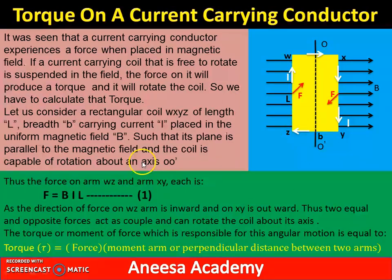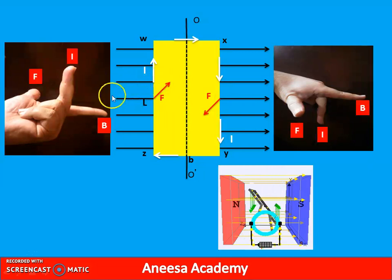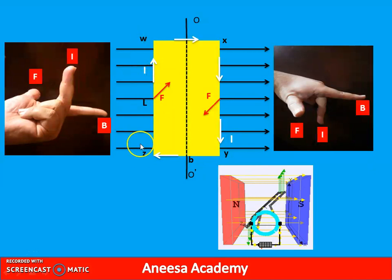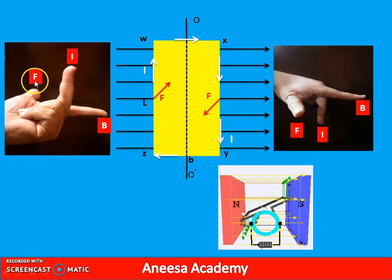First, we discuss the force on arm W to Z. If we see this portion, the current I and the magnetic field B are perpendicular to each other. The direction of I is upward and B is perpendicular. In this condition, the force will be maximum. Using Fleming's left-hand rule, as discussed in the last lecture, the force on arm WZ is directed inward.